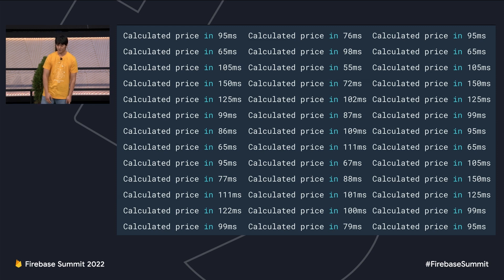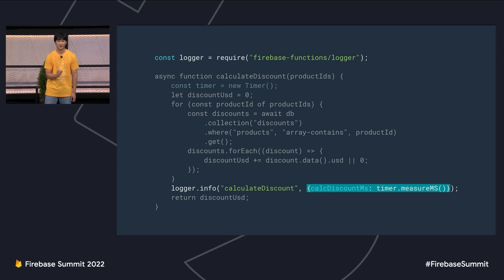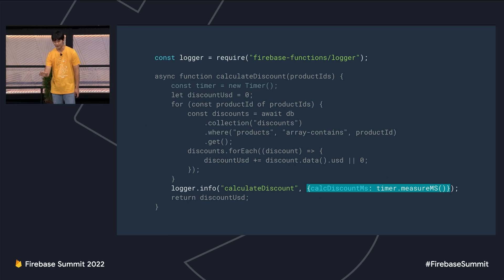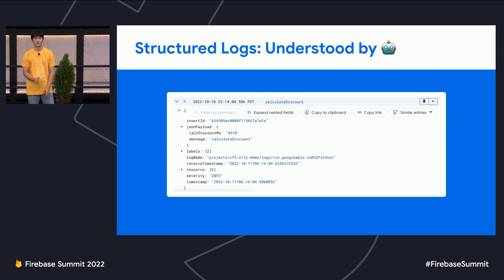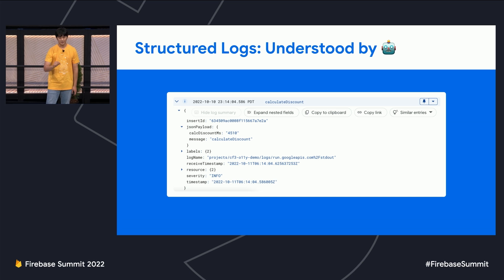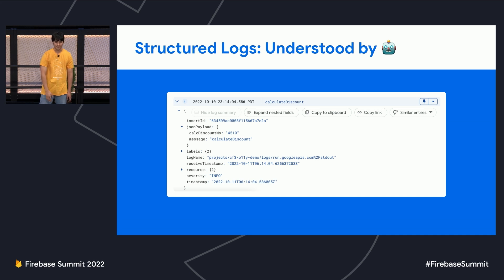So how do we get some help? Suna figures out she can import the logger included with the Firebase Functions SDK. Instead of writing strings, she's going to write JavaScript objects. This technique is called structured logging — the JavaScript object is readable by both humans and machines. When you're using Cloud Logging, the JSON payload will have the message and the time it took to calculate the price or discount.